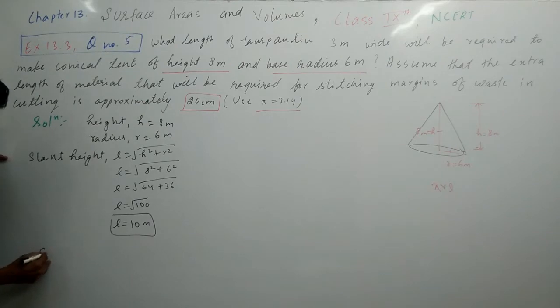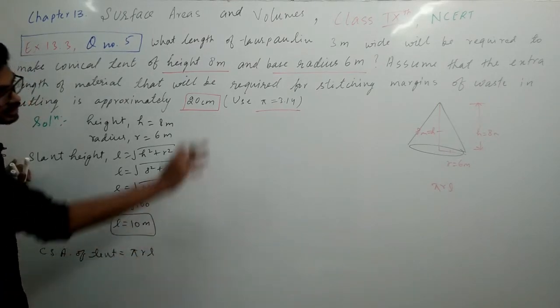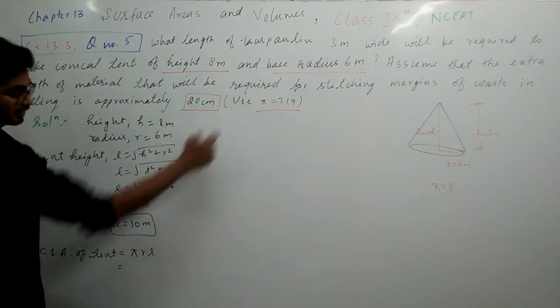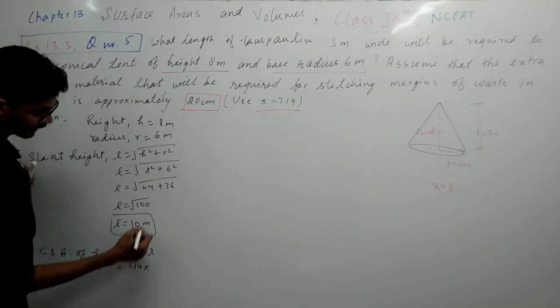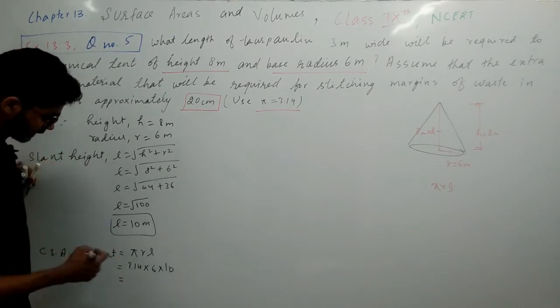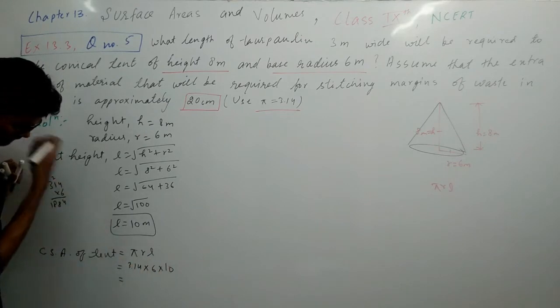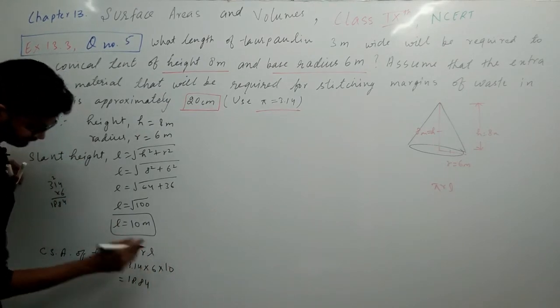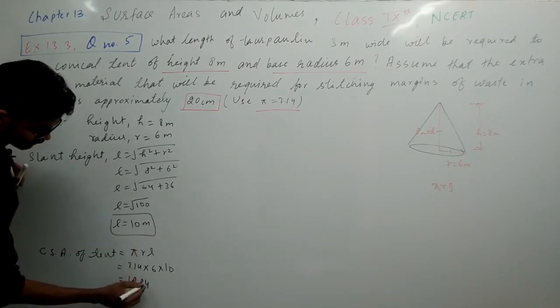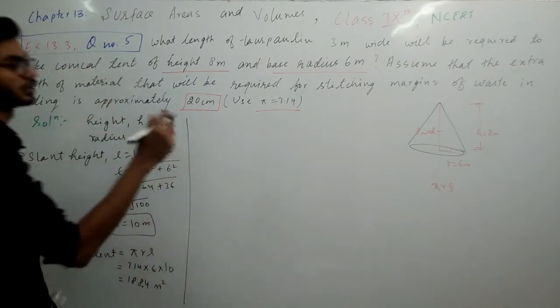Now let's find the curved surface area of tent. Tent's curved surface area will be Pi r l. Pi value is 3.14, r value is 6, and l value is 10. When you multiply, your answer will be 3.14 times 6 equals 18.84. So curved surface area is 188.4 square meters.